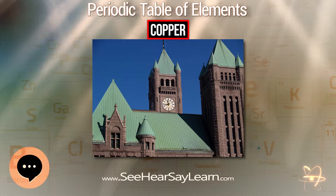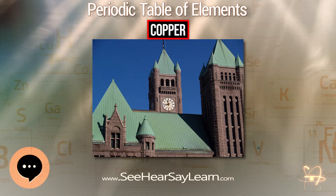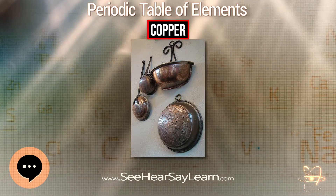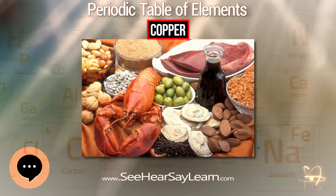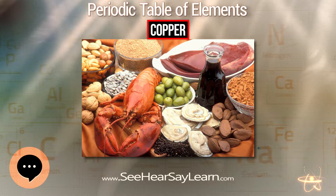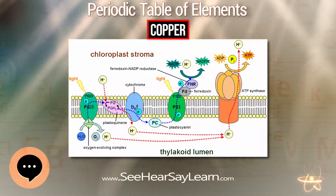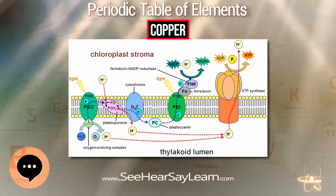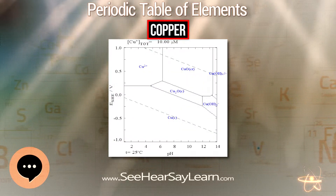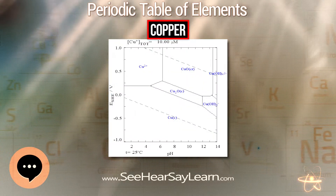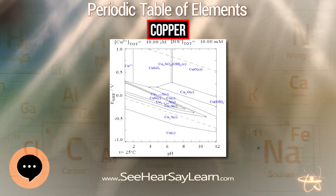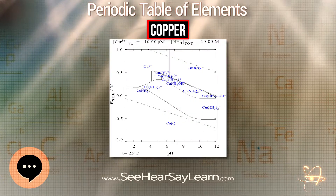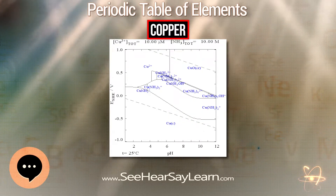The main commercial sulfide ores are especially chalcopyrite, bornite, and to a lesser extent covellite and chalcocite. These minerals are concentrated from crushed ores to the level of 10–15% copper by froth flotation or bioleaching. Heating this material with silica in flash smelting removes much of the iron as slag, exploiting the greater ease of converting iron sulfides into oxides, which react with the silica to form silicate slag that floats on top of the heated mass.